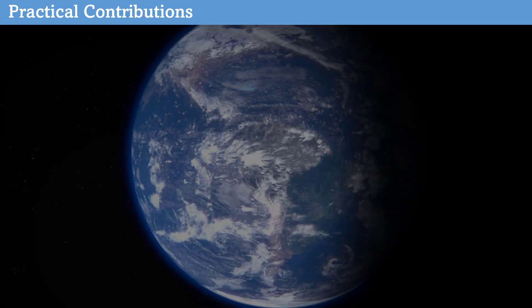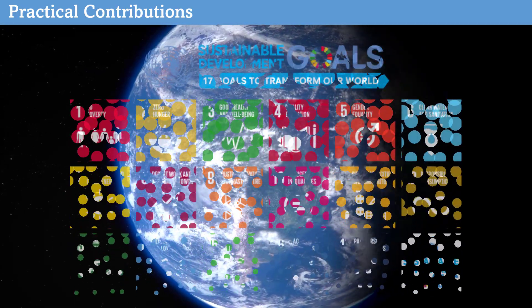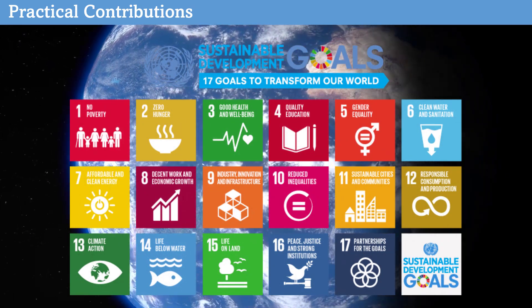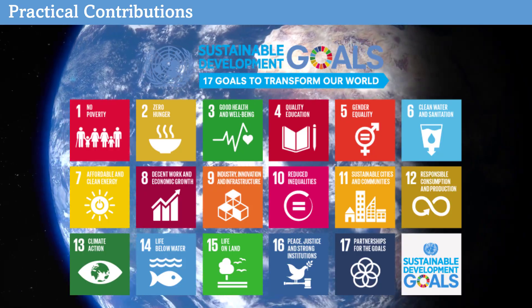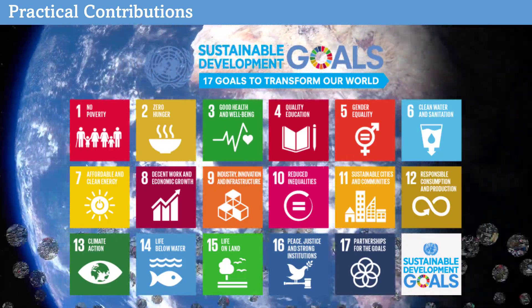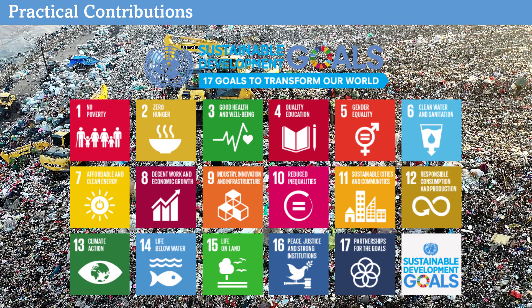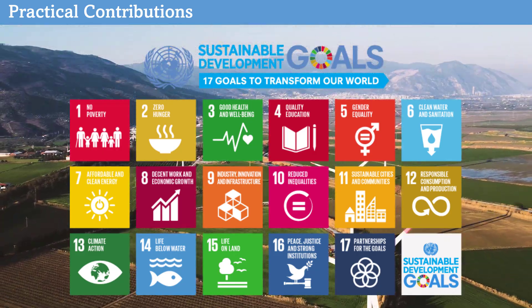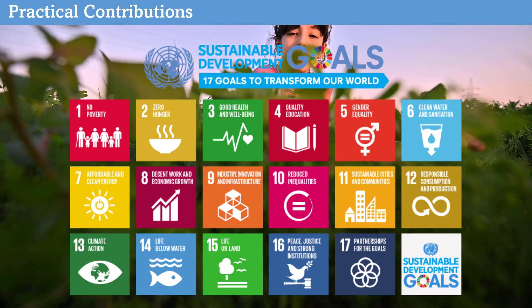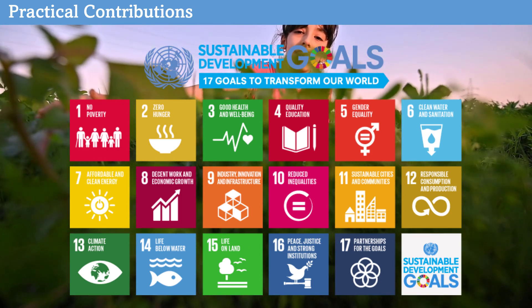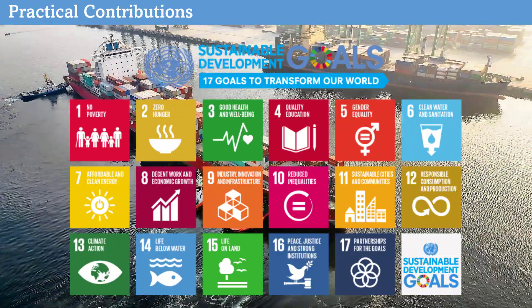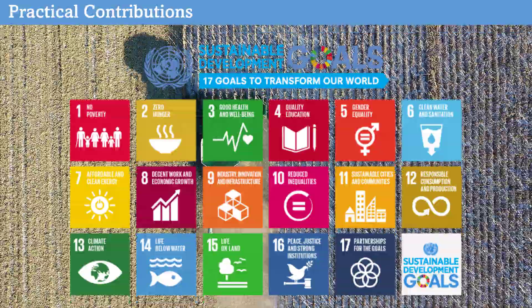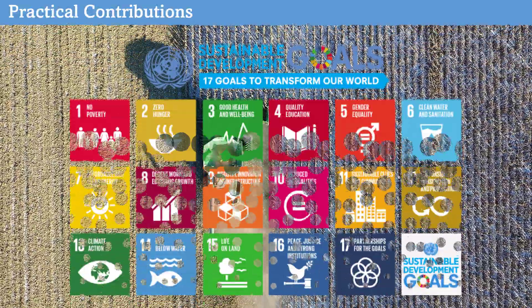One of the most effective methods of writing about your practical contributions is looking at your research from commonly used impact frameworks such as the sustainable development goals, or SDGs. For example, explain how your research would reduce poverty, hunger, and inequality, or how it may improve good health and well-being, quality education, gender equality, clean water, affordable and clean energy, decent work and economic growth, industry and innovation, and so on. Spend some time to read more about SDGs and see how you can link your research to any of these goals.